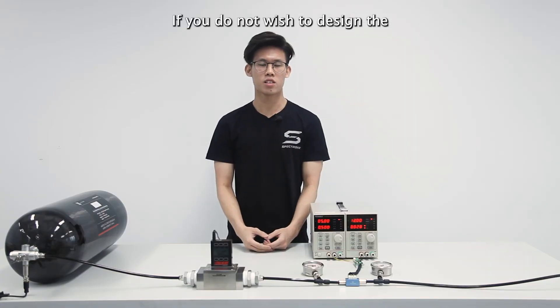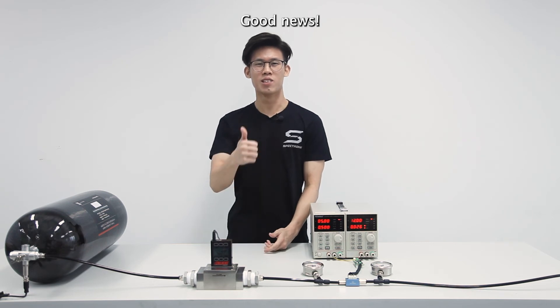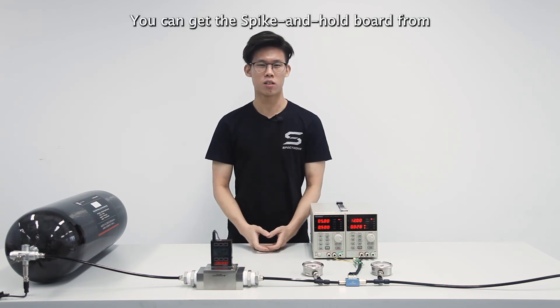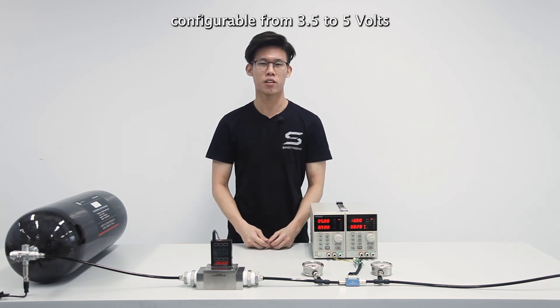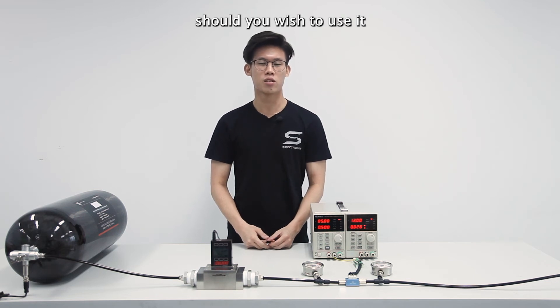If you do not wish to design the spike and hold board yourself, good news! You can get the spike and hold board from Spectronic as well. The hold voltage is factory configurable from 3.5V to 5V at the time of order, should you wish to use it for other applications.